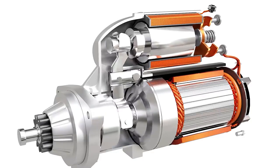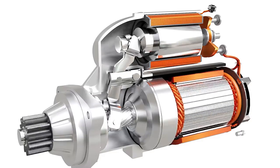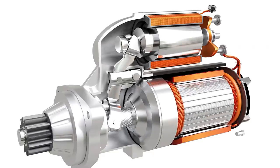This rotation is achieved by using a helical spline, which helps mesh the pinion with the flywheel more conveniently. As the pinion and flywheel are properly meshed, the contactor switch gets closed and the motor spins.